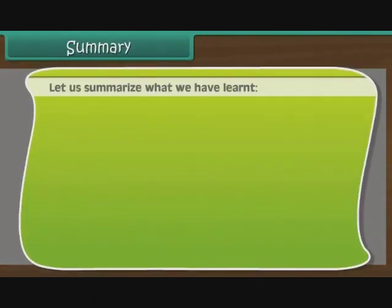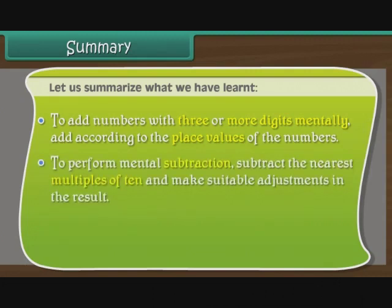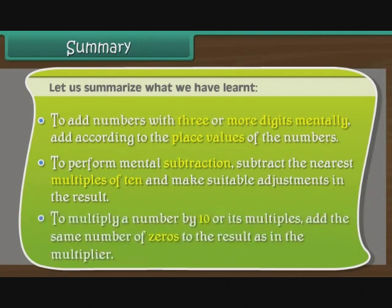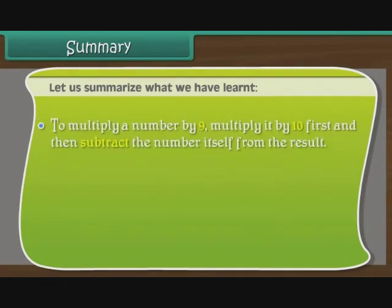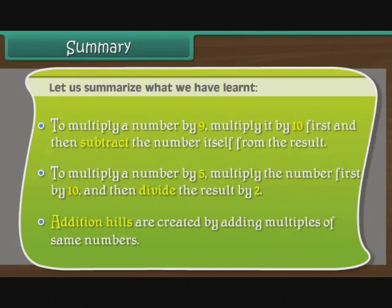Let us summarize what we have learned. To add numbers with 3 or more digits mentally, add according to the place values of the numbers. To perform mental subtraction, subtract the nearest multiples of 10 and make suitable adjustments in the result. To multiply a number by 10 or its multiples, add the same number of zeros to the result as in the multiplier. To multiply a number by 9, multiply it by 10 first and then subtract the number itself from the result. To multiply a number by 5, multiply the number first by 10 and then divide the result by 2. Addition Hills are created by adding multiples of same numbers.